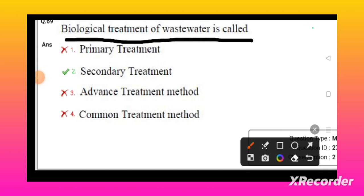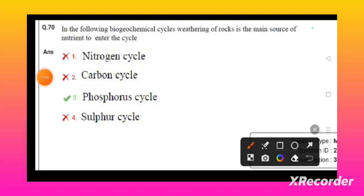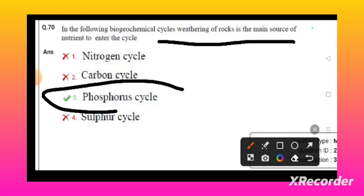Biological treatment of wastewater is called secondary treatment. In the following biogeochemical cycle, weathering of the rocks is the main source of nutrient to enter into the phosphorus cycle. In the phosphorus cycle only, the nutrients enter through the weathering process.